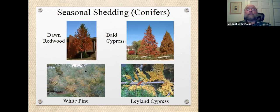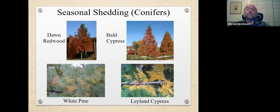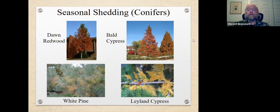There's also seasonal shedding of conifers. Dawn redwood and bald cypress on the top are actually deciduous conifers — they lose their leaves every year. I get people asking me what killed their trees, but it's normal for them to lose their leaves and they put out nice new green leaves in the spring. White pine, Leyland cypress, and a lot of the conifers lose their older foliage while retaining their newer foliage. This happens every year where the oldest foliage is cast off in preparation for winter — less resources needed to keep it. As new growth comes out on the terminal ends, the older foliage is no longer functioning, so it is cast off. That's normal.